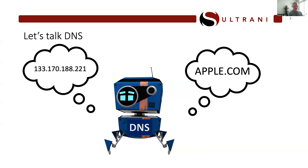Most people prefer the domain name on the right over the number on the left, mainly because remembering a bunch of numbers is tough — especially if you need to remember dozens of them. You quickly lose context in a way that contrasts sharply with a name, which we bind to memory much more easily.